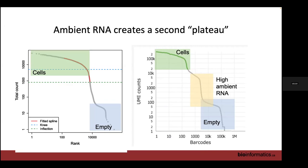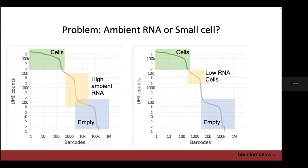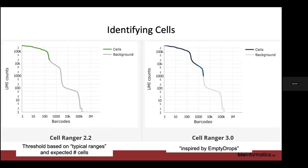One question: if you have a precursor cell differentiating and a heterotypic doublet has that precursor and its progeny, how would you distinguish them? The doublet would look like a cell transitioning between the two states — you essentially won't be able to tell the difference. The ambient RNA is from part of the cells in your sample getting broken, but it's still RNA from your tissue — a mixture of all your cells.